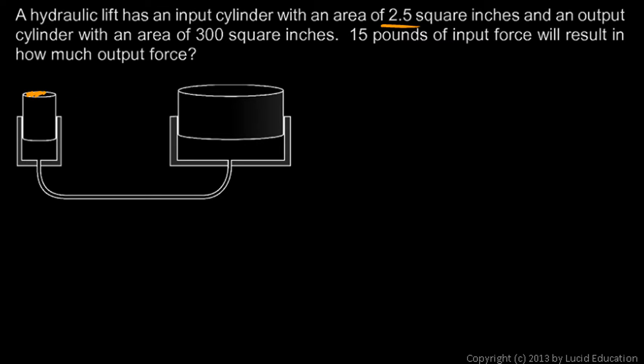And an output cylinder over here is much larger, area of 300 square inches. Then 15 pounds of input force will result in how much output force? Well, this machine multiplies the force and it does so greatly. The amount that it multiplies the force by is the ratio of the two areas.